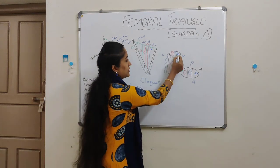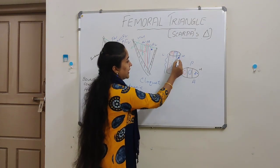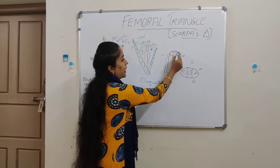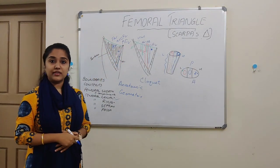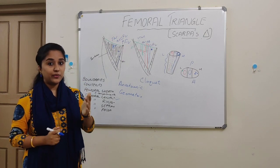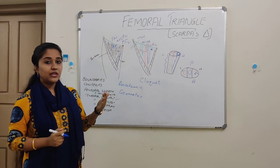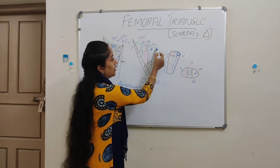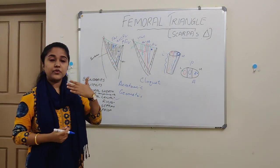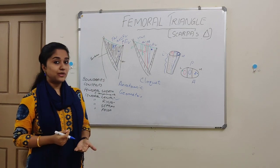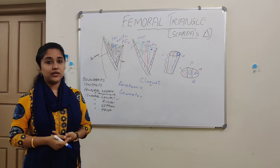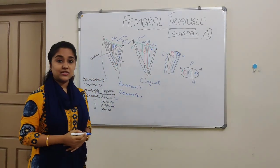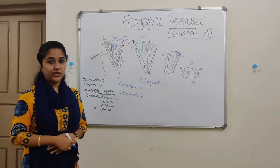The upper part of the femoral canal is formed by the femoral ring. The femoral ring is bounded anteriorly by the inguinal ligament, posteriorly by the pectineus muscle and its covering fascia, medially by the lacunar ligament, and laterally by the femoral vein.